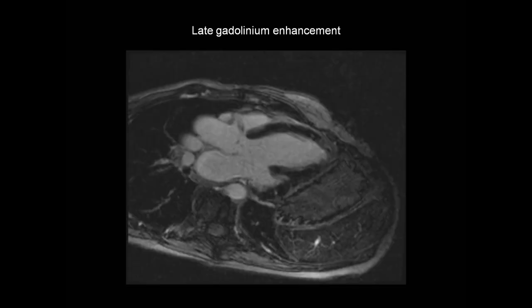Here's a different patient. This is a late gadolinium enhancement image in the three-chamber view, showing the left ventricle, left atrium, aortic valve, and aortic root. Again, most of the myocardium appears dark, but there are patchy areas of late gadolinium enhancement present in a non-ischemic distribution — it is not sub-endocardial, but rather present in the mid-wall. This meets one of the criteria for the CMR diagnosis of myocarditis.